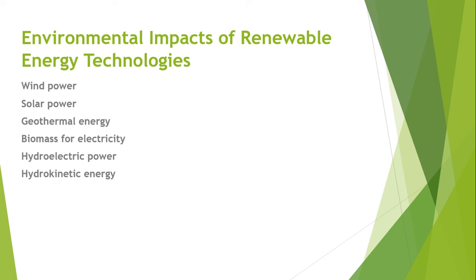Despite its vast potential, there are a variety of environmental impacts associated with wind power generation that should be recognized and mitigated, including land use issues and challenges to wildlife and habitat. The second source is solar power. Like wind, the sun provides a tremendous resource for generating clean and sustainable electricity. Environmental impacts of solar power can include land use, habitat loss, water use, and the use of hazardous materials in manufacturing photovoltaic cells.